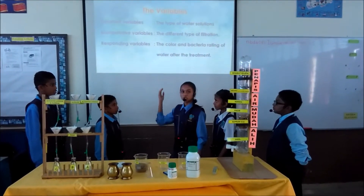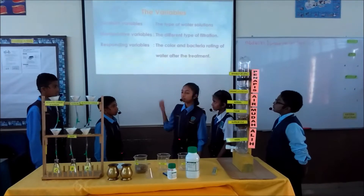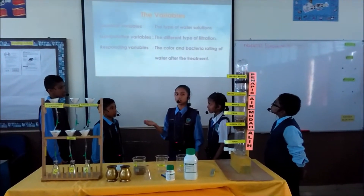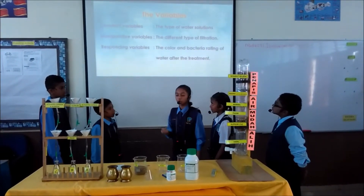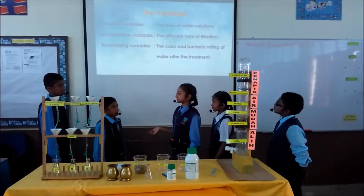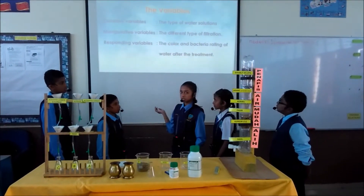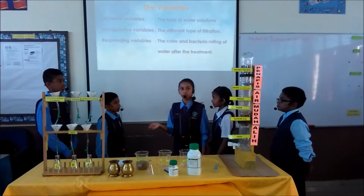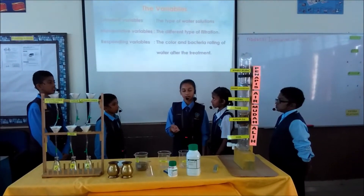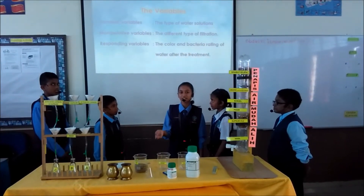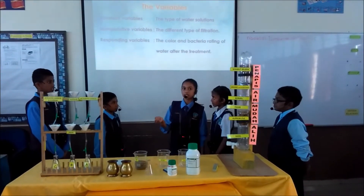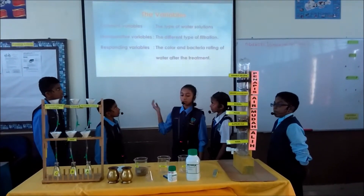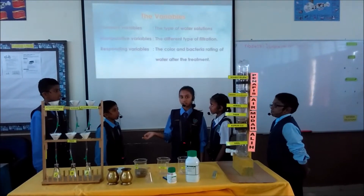Three variables have been chosen in this experiment. First is the constant variable — in this experiment, the constant variable is the water solution; we add the same contaminants of food coloring and yogurt in this solution. Second is the manipulative variable, which refers to the different types of filtration: Funnel A is filled with activated carbon, Funnel B is filled with copper, and Funnel C is filled with activated carbon and copper. Third is the responding variable — we measure color and bacteria rating after the treatment.